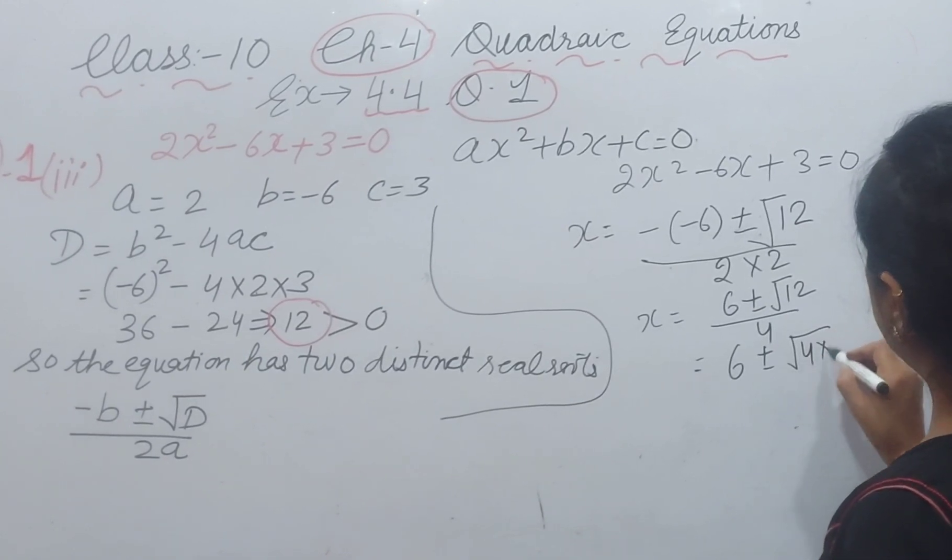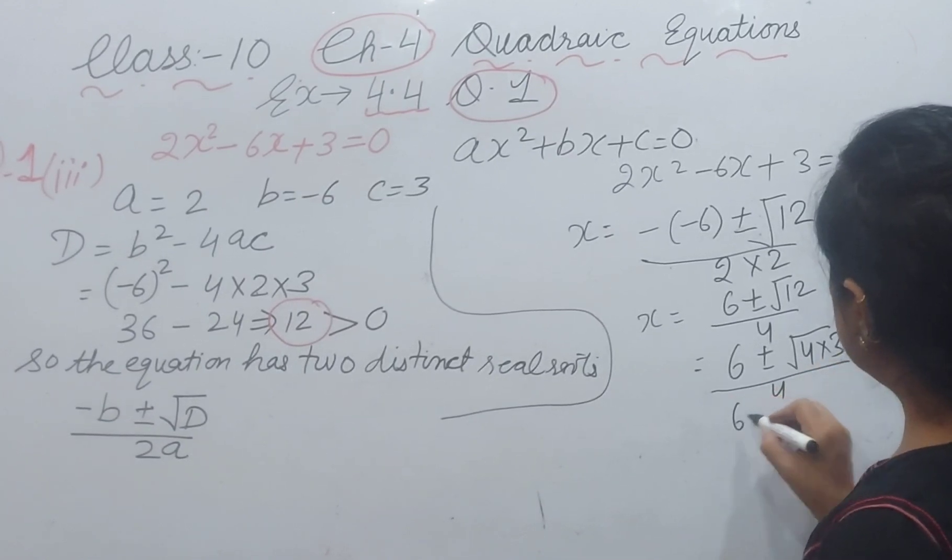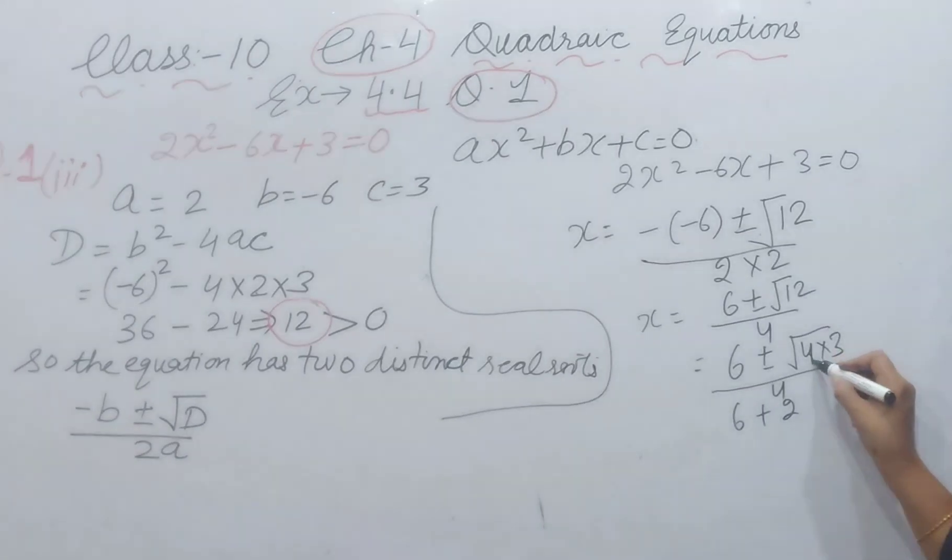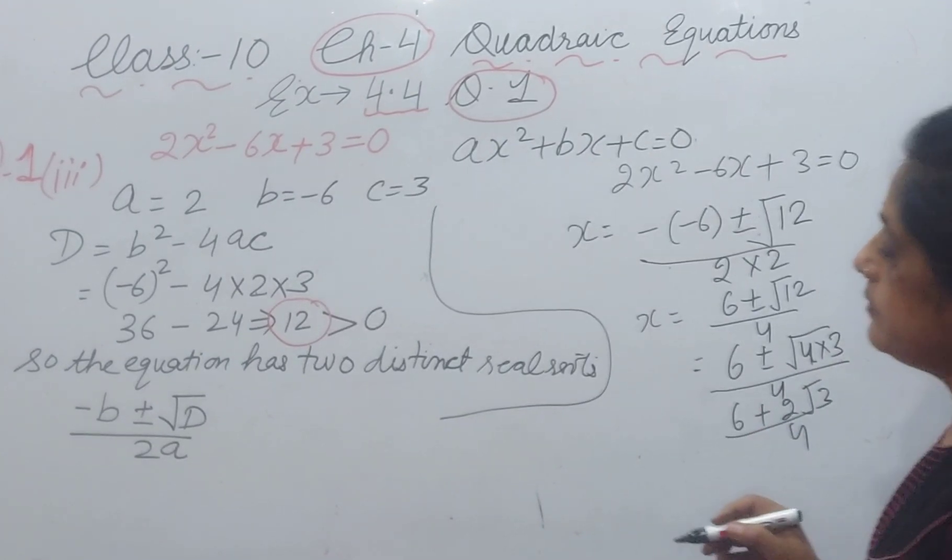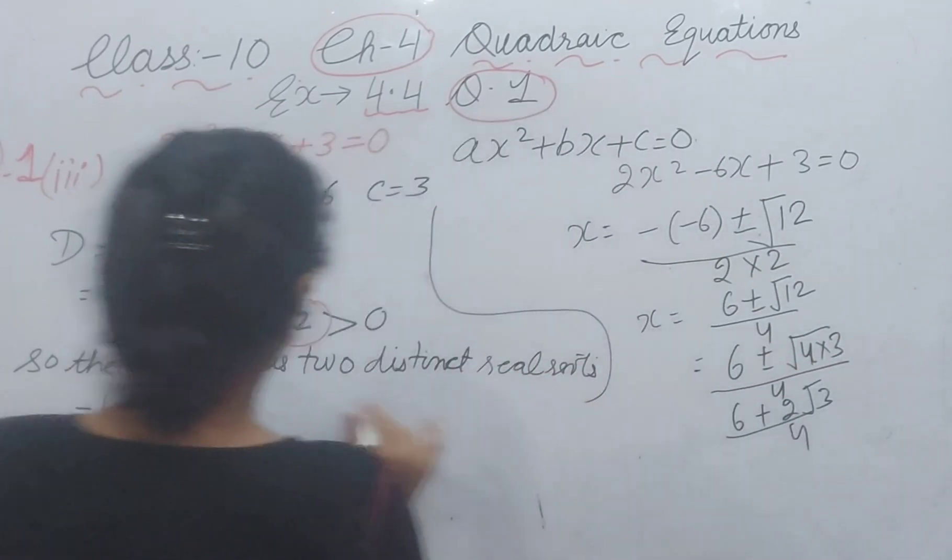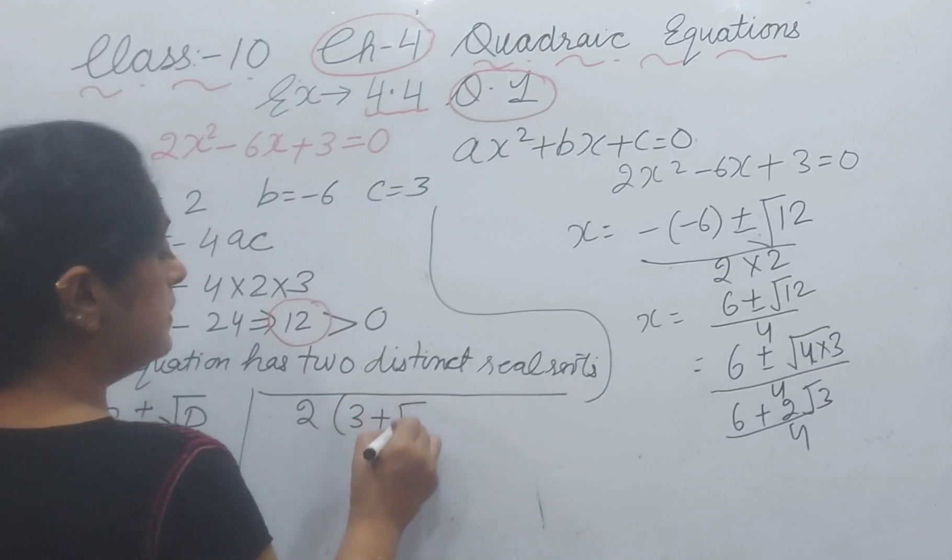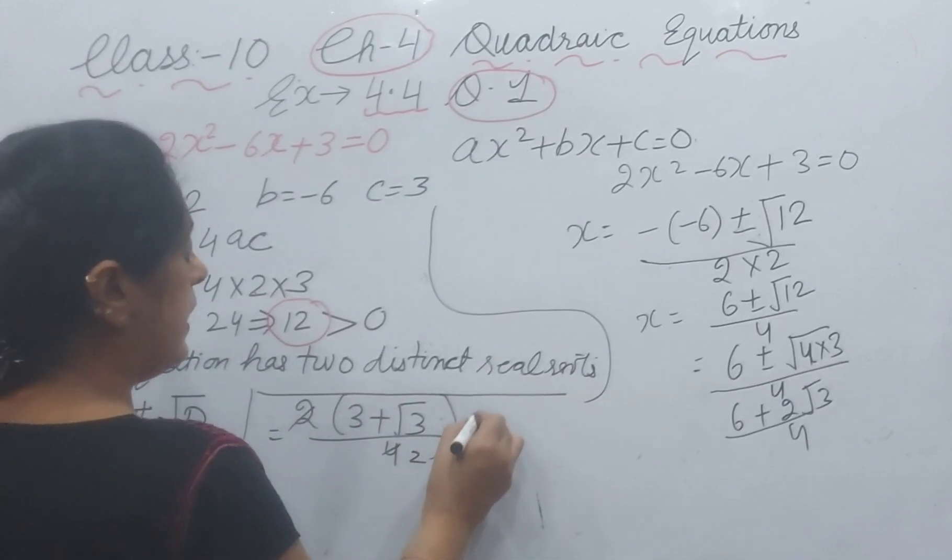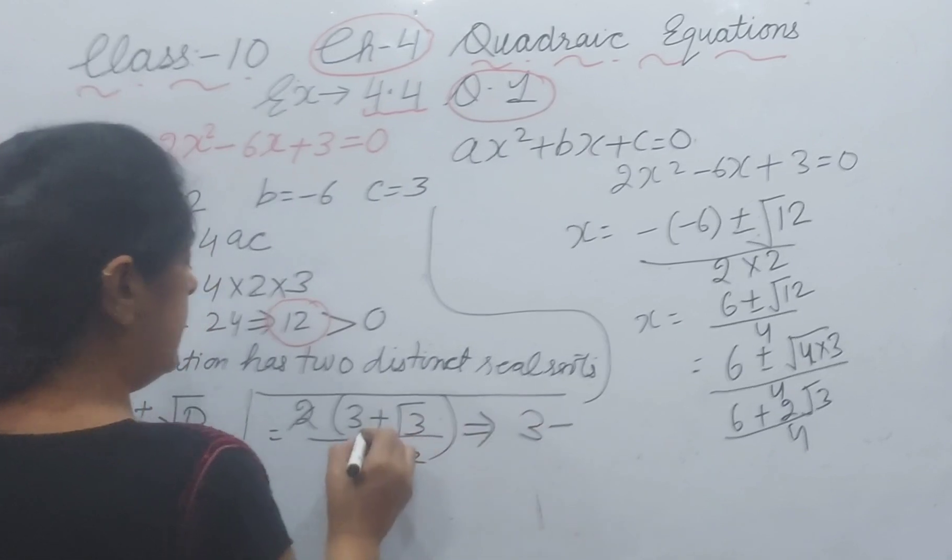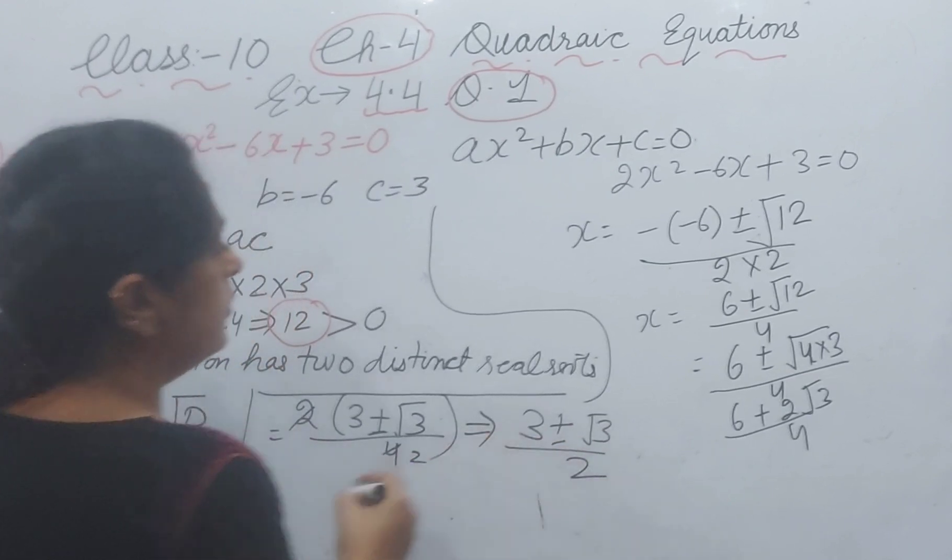x = (6 ± √12) / 4. √12 = √(4×3) = 2√3. So x = (6 ± 2√3) / 4. Taking 2 as common from the numerator: 2(3 ± √3) / 4. Simplifying: x = (3 ± √3) / 2.